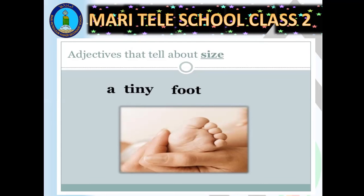Now here we have a picture of the foot of a baby. 'Foot' is a noun. The word that tells us about the foot is 'tiny' — so tiny is an adjective. Adjectives also tell about size. It's a tiny foot, not a big foot — it's a tiny foot. So 'tiny' is telling us about the size of the foot. Adjectives tell us about size as well.